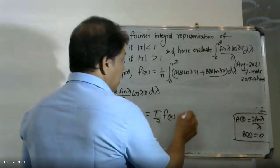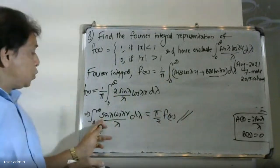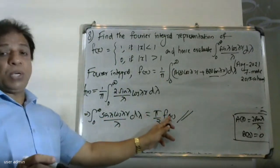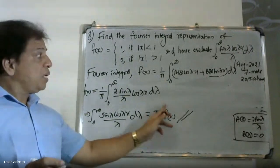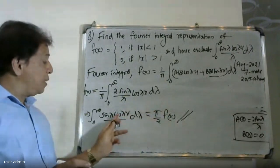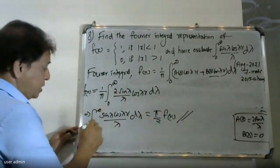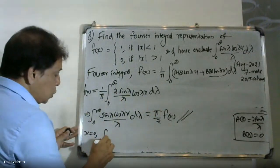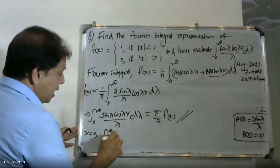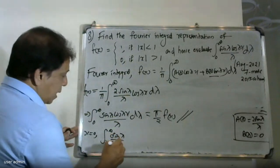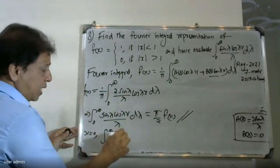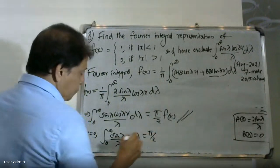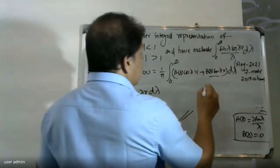Therefore, the integral from zero to infinity of sin(lambda) cos(lambda x) divided by lambda, d lambda is equal to pi times f(x). This is the Fourier integral representation.